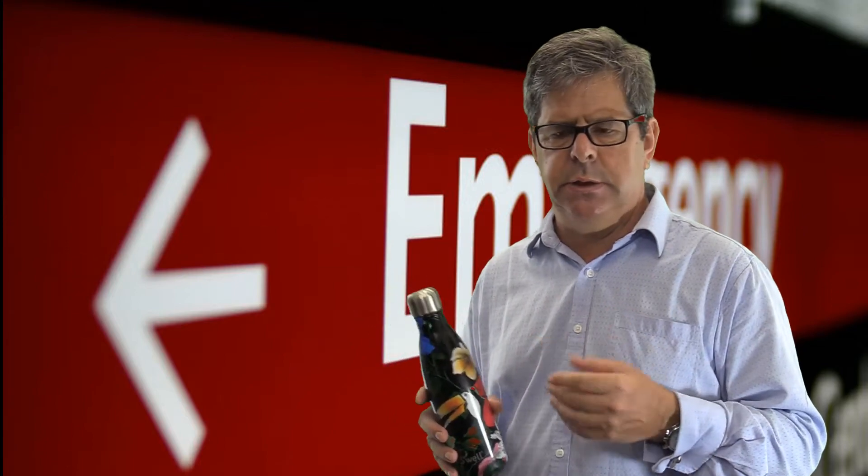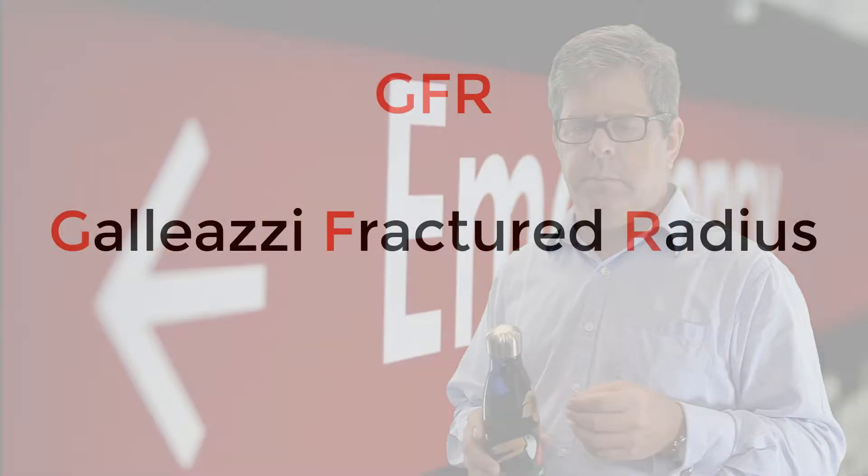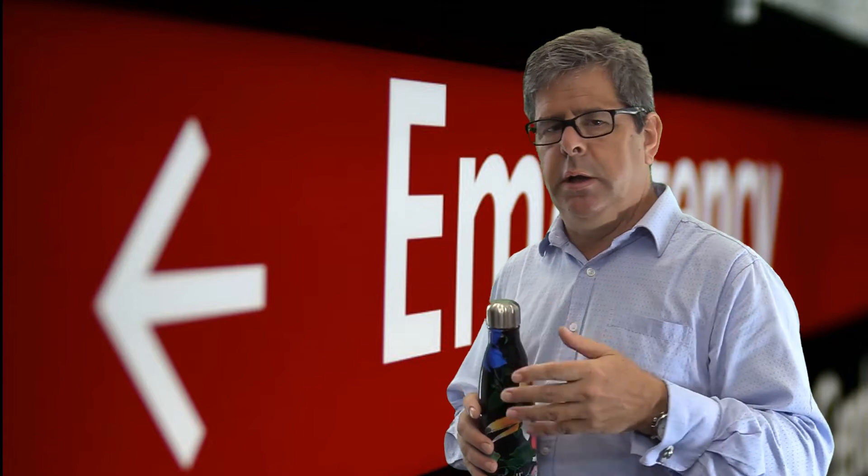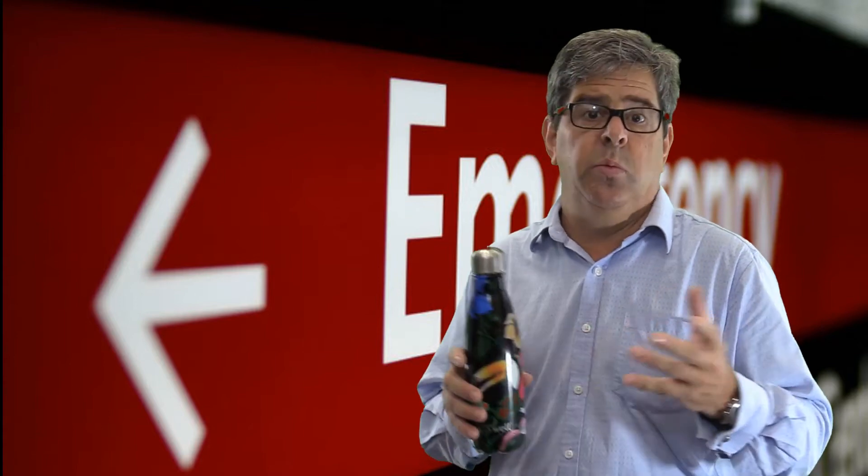There are a whole lot of mnemonics you can use to try to remember the difference between a Galeazzi and a Monteggia fracture-dislocation. I use GFR: Galeazzi is a fractured radius — so if I know there's a fractured radius, I'll be looking for a dislocated ulna for a Galeazzi. If the radius isn't fractured, I'll be looking for a fractured ulna — oh, it's the other guy, it's Monteggia. Well, it works for me.